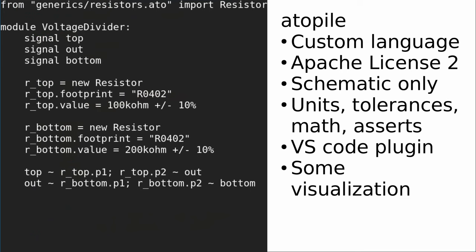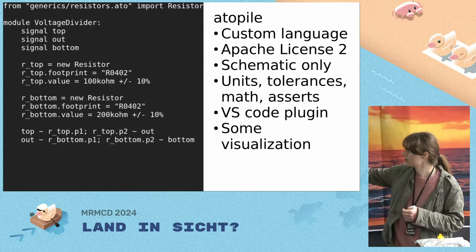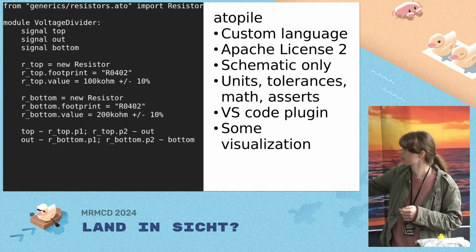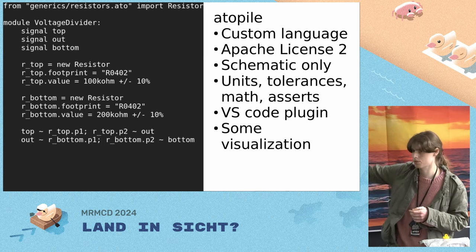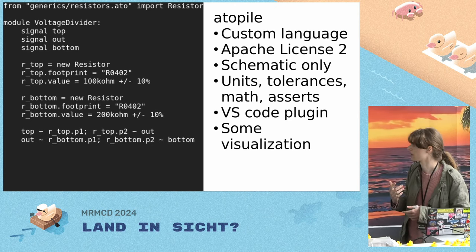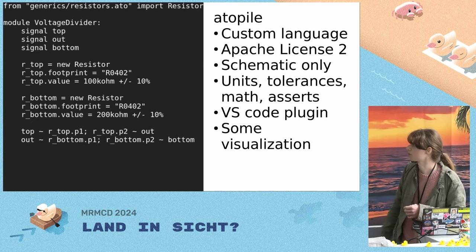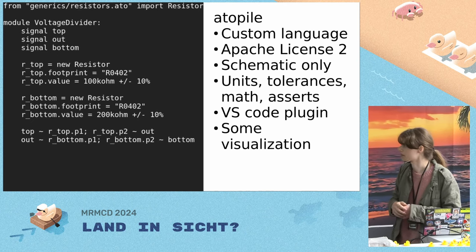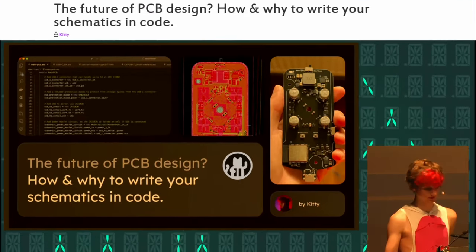There is also Atopile, which is another startup but open source. They try to be beginner friendly with a relatively simple, easy-to-learn language. If you're an electrical engineer and don't know how to code much, it's probably very easy to pick up, and it does have a nice community. Using a custom language gives you niceties like first-class support for units and tolerances — you can just write plus or minus 10 percent. They also have VS Code plugins, support for math and asserts, and some ability to visualize things.